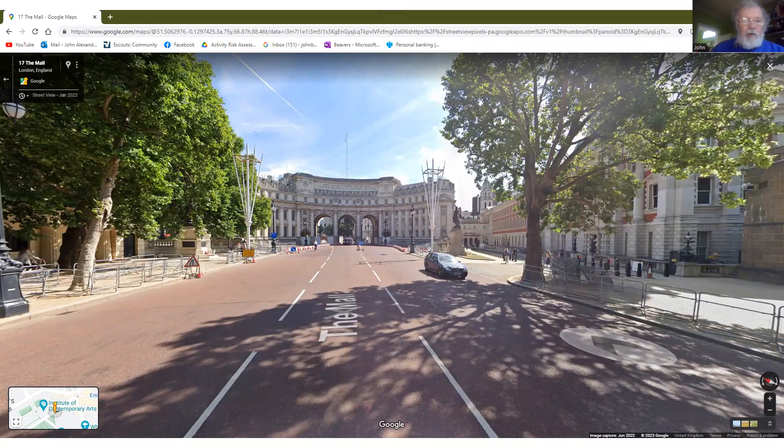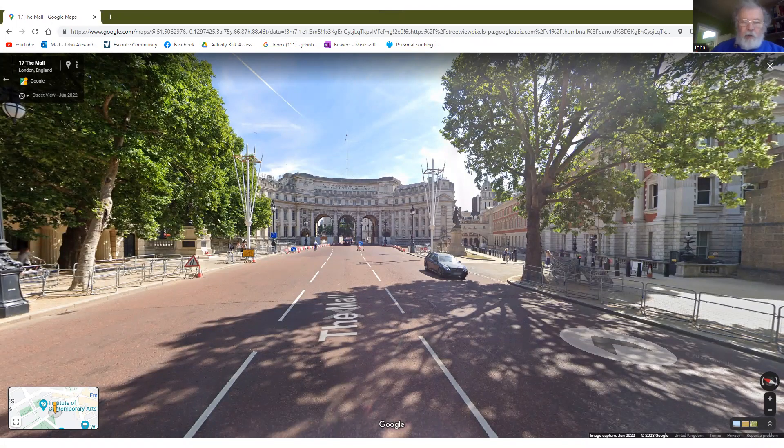And we can see the things that we have passed. We can see our reference point of Admiralty Arch and we can see other features that we've passed. And if one of those features is suitable, then that could become our new reference.